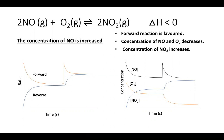Our first situation: the concentration of NO is increased. According to Le Chatelier's principle, the system wants to decrease the excess NO, so the forward reaction is favoured. As a result, the concentration of NO and O₂ will decrease and the concentration of NO₂ will increase.